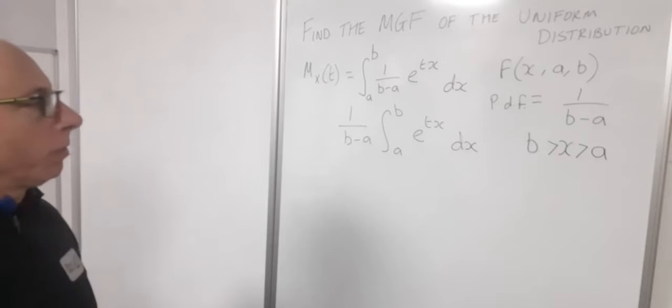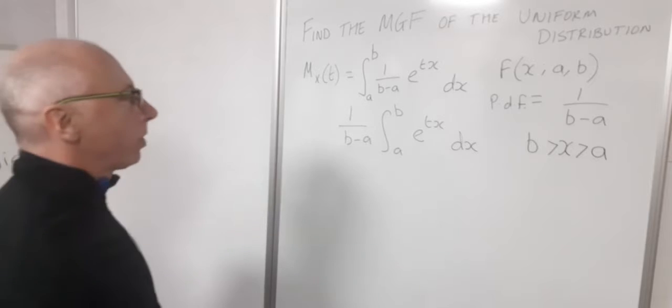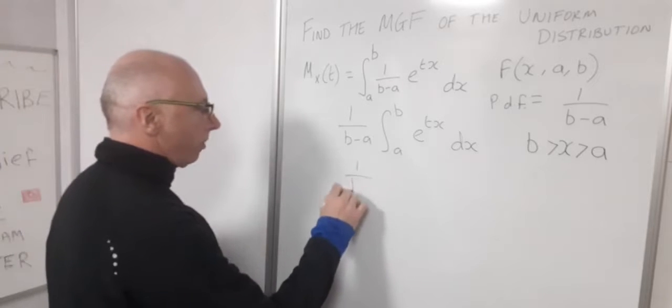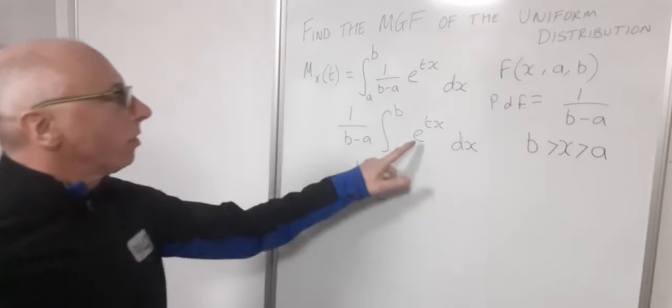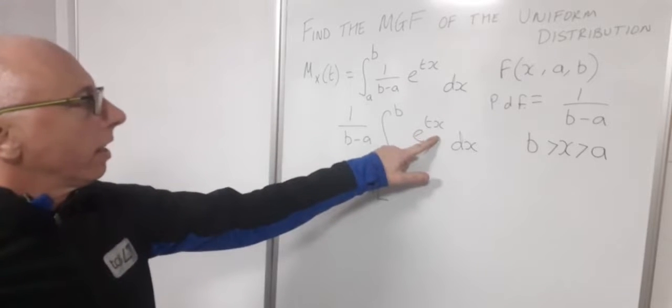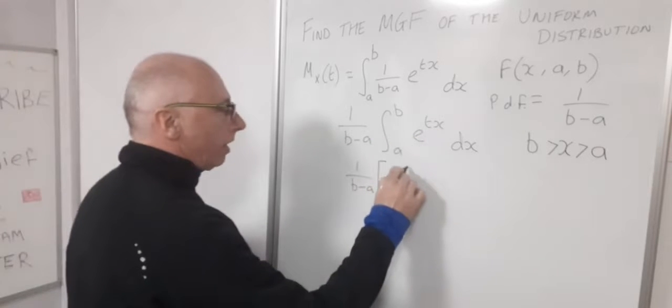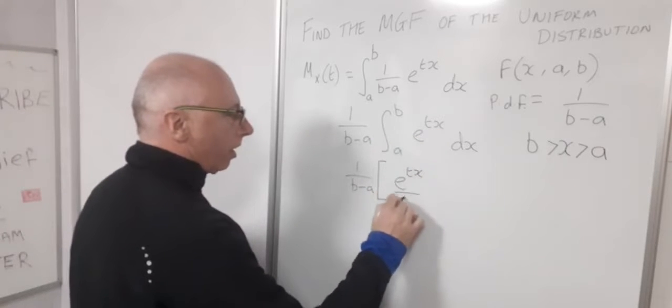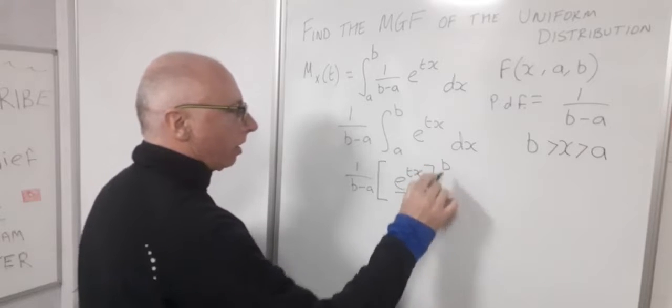We can now integrate this straight off from there with this as a constant multiple. So let's do that. So 1 over B minus A. And then the integral of E to the T X is 1 over T E to the T X. So I'm going to write that as E to the T X over T. And that's from A to B.